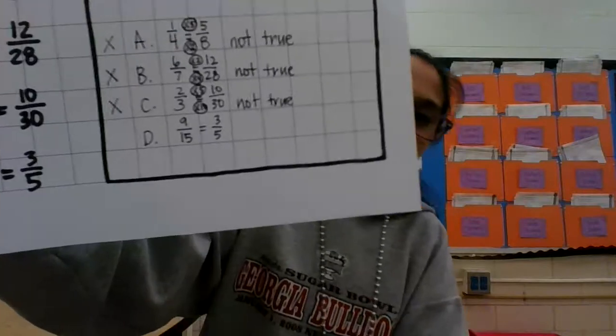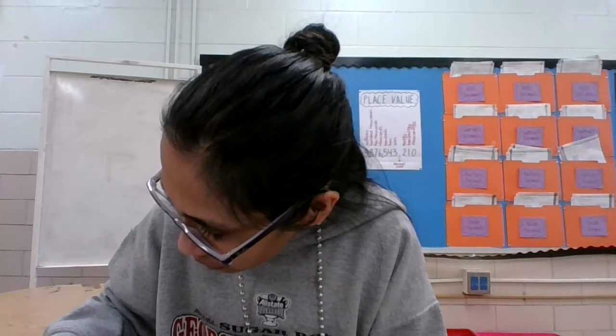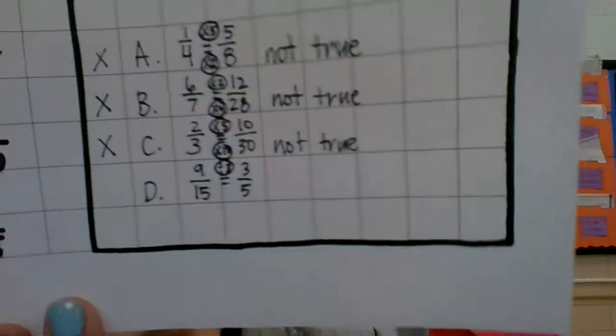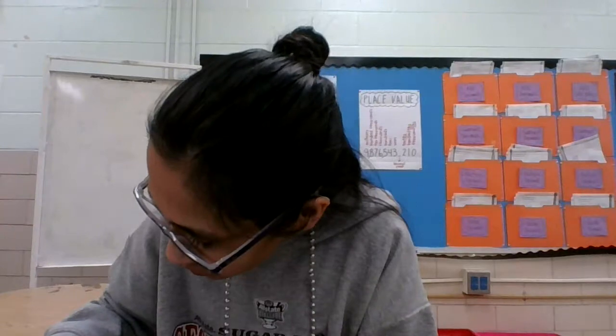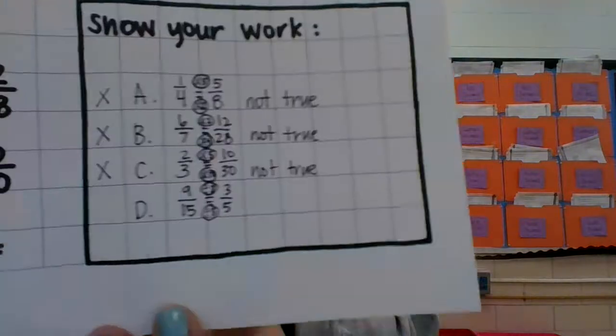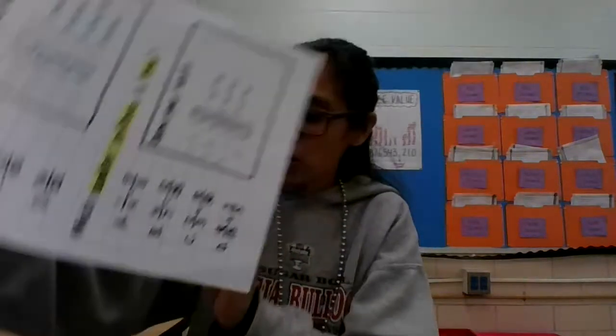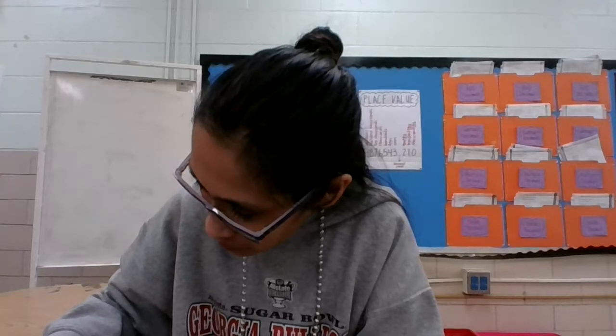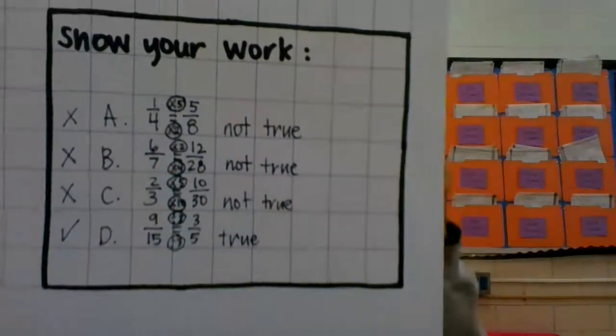So we have nine-fifteenths equals three-fifths. How do I go from nine to three? For this one we're not multiplying — numbers are getting smaller, so we need to divide. Divide nine by three. And how about fifteen to five? Divided by three. Are they equal to each other? Yes! Because it's divided by three and divided by three — so it is true. That is your correct answer.